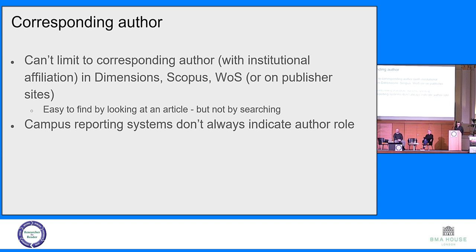When searching Dimensions, Scopus, Web of Science, or pretty much any publisher site, you cannot limit to the corresponding author at a particular institution with a particular affiliation. If I'm trying to figure out how many publications the University of Denver has as corresponding author with a particular publisher, I just can't do that. I can't answer that question. It's easy to find corresponding author information if you look at each article individually — it's there — but it's not something you can search on. And yet, for understanding the value of a potential transformative agreement, you have to have that information. We also tried looking in campus research information management systems, but those don't necessarily include the author role on an article either.